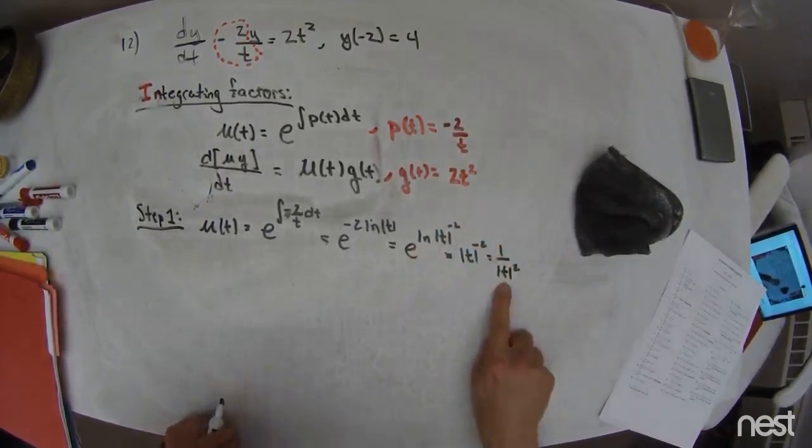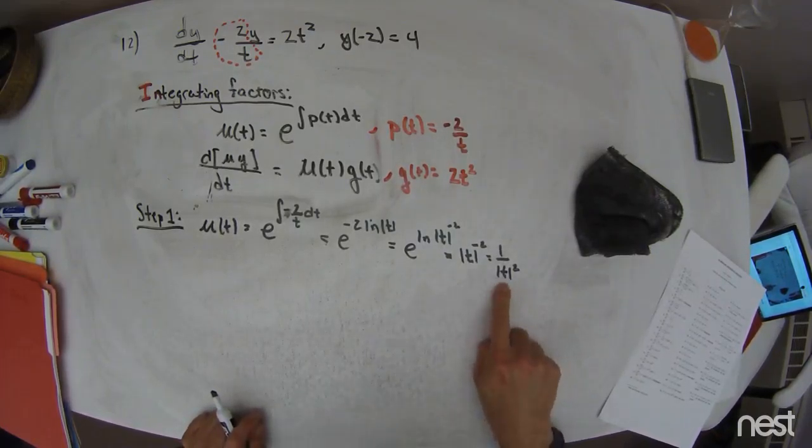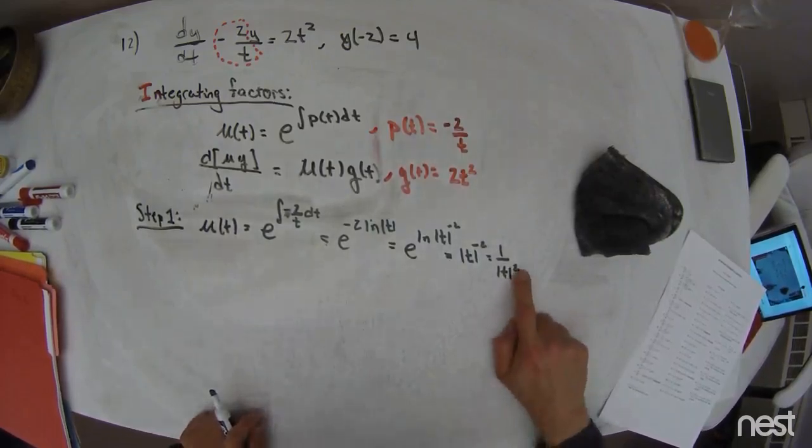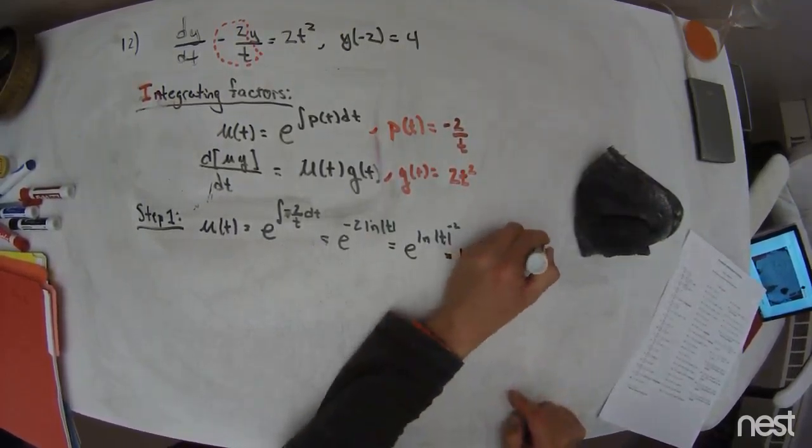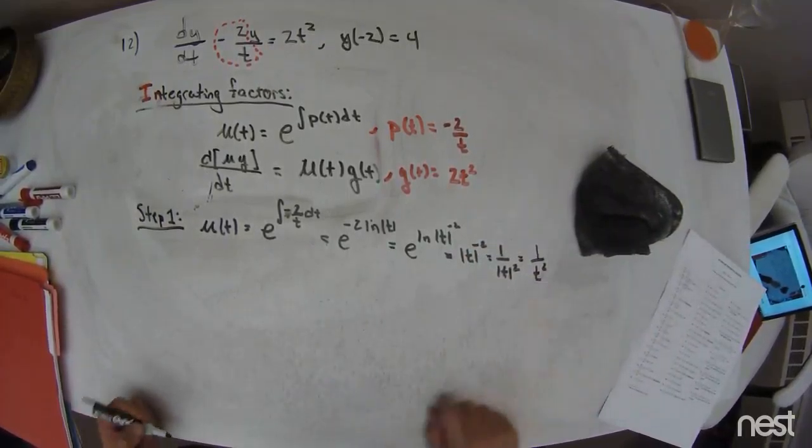The absolute value sign returns a negative if t is less than 0, and a positive if t is a non-negative number. That doesn't matter because it's squared, so whatever comes out of that is just going to get destroyed by the squared. So this is as good as t squared.